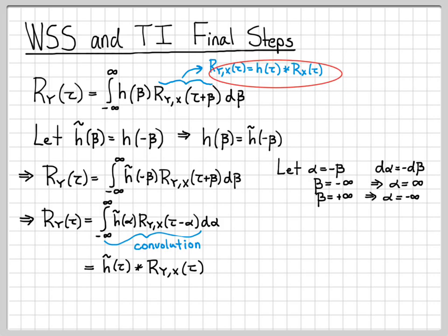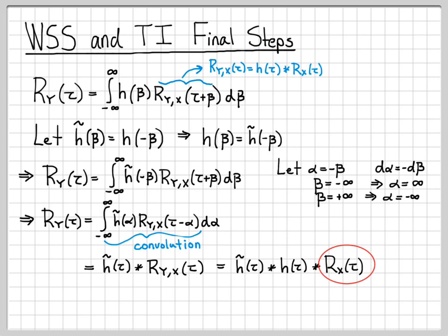Recall from the blue writing that we already know the cross-correlation function itself can be written as a convolution. Substituting that in, we have the time-reversed impulse response convolved with the impulse response convolved with the autocorrelation function of the input random process. To be precise: the input random process has an autocorrelation function R_x(τ) associated with it — we're not putting the autocorrelation function into the linear system, but rather a random process x(t), and R_x(τ) is simply a function associated with it.